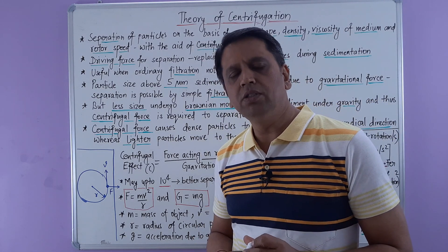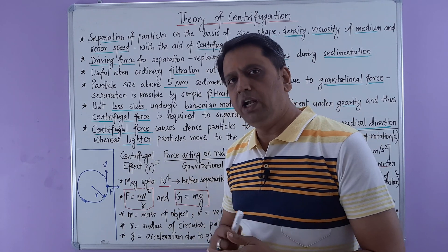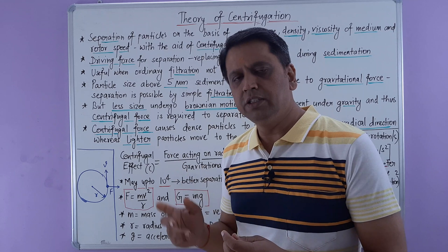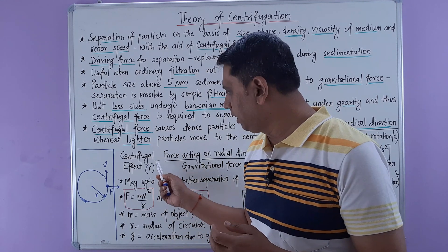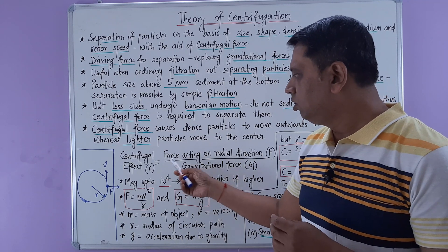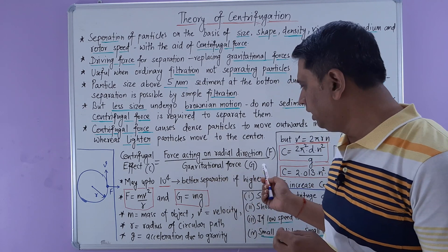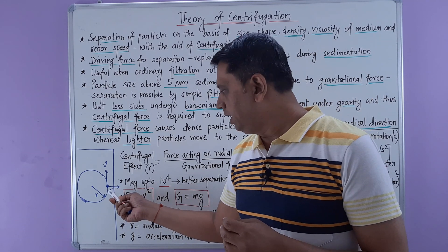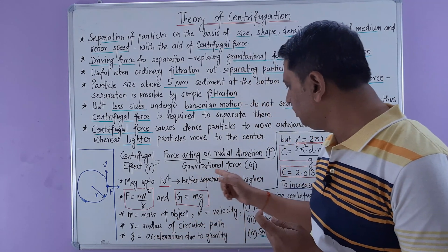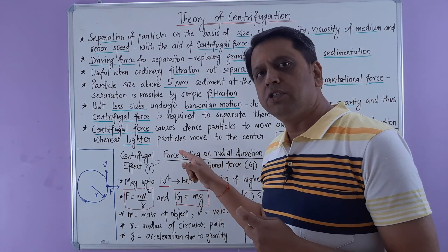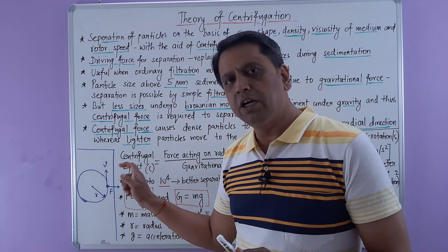Now let us discuss the mathematical aspects of centrifugation. An important terminology is centrifugal effect, denoted by capital C. The centrifugal effect is equal to the force acting in the radial direction, F, divided by the gravitational force, G. Both kinds of forces are applicable to any particle moving in a circular path.